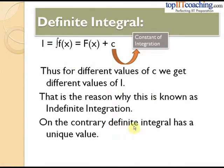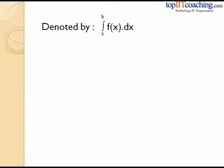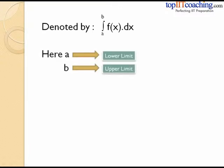On the contrary, a definite integral has a unique value. The basic difference between indefinite and definite integration is that indefinite integration does not give us a unique value of I, whereas definite integration gives us a unique value. Any definite integral is denoted by the integral of f(x) dx from a to b, where a is called the lower limit and b is called the upper limit. Definite integration takes place over an interval from a to b.